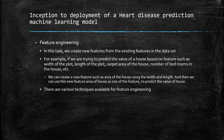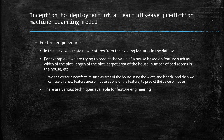Feature engineering is one more task we perform as part of data preprocessing. In this task, we create new features from the existing features in the dataset. For example, if you are trying to predict the value of a house based on features such as width of the plot, length of the plot, carpet area, and number of bedrooms, we can create a new feature — the area of the house — using width and length, and then use this new feature for predicting the house value. Creating new features from existing features is called feature engineering.